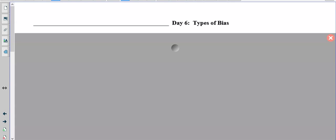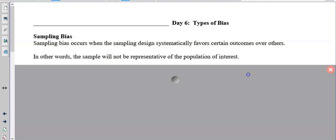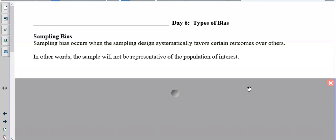All right, day six, types of bias. So sampling bias occurs when the sampling design systematically favors certain outcomes over others. In other words, the sample will not be truly representative of the population of interest.